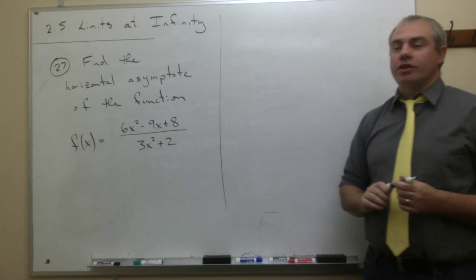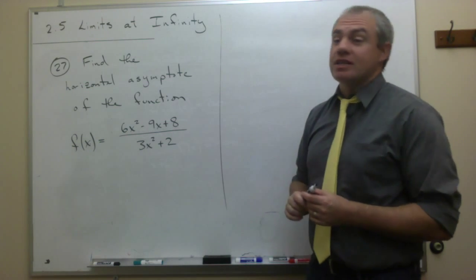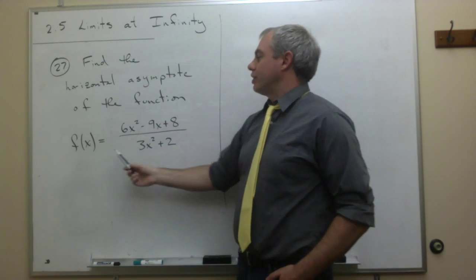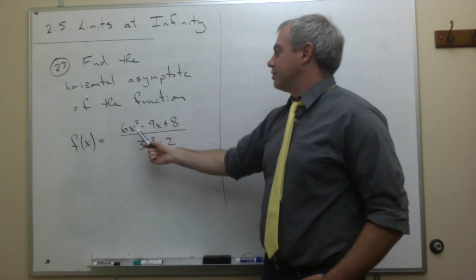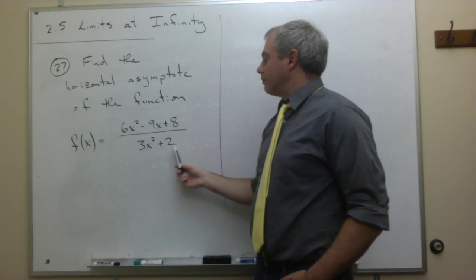In this video, we'd like to look at problem number 27, and problem number 27 is asking us to find the horizontal asymptote of the function f of x is equal to 6x squared minus 9x plus 8 over 3x squared plus 2.